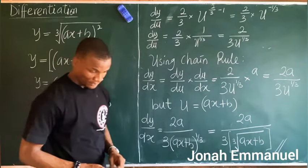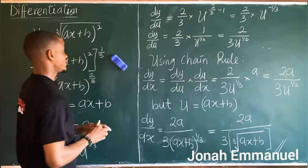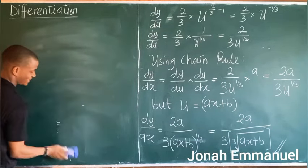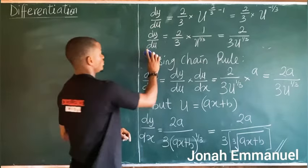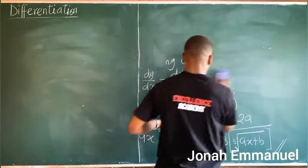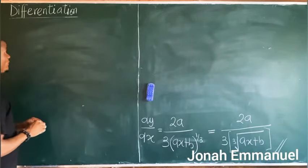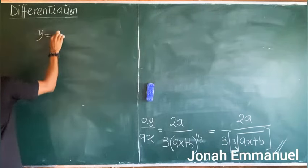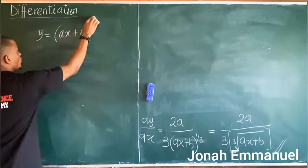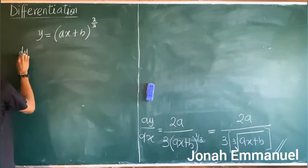Next I want to show you a shortcut for differentiation. I'll analyze this more thoroughly in our next class, but let me give you a hint. Starting from y equals (ax + b) to the power two over three, the shortcut gives dy/dx directly.